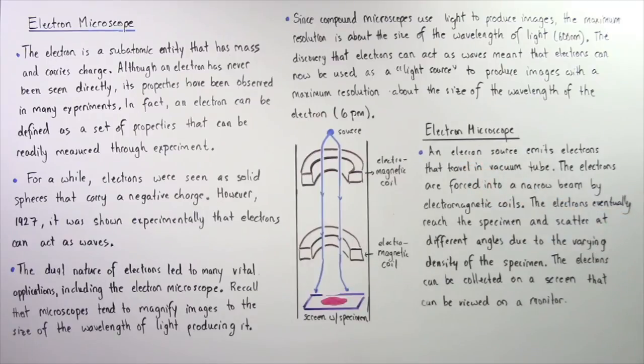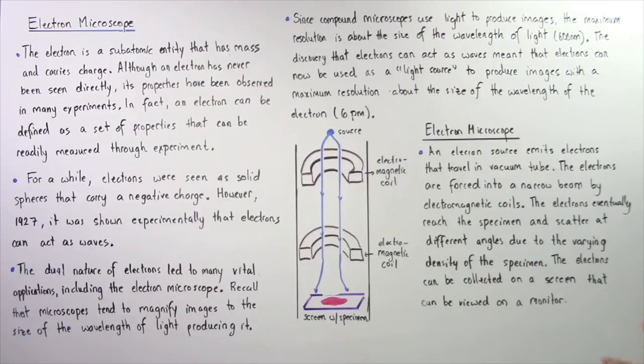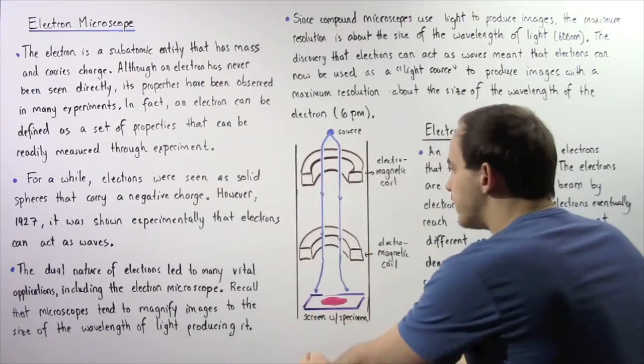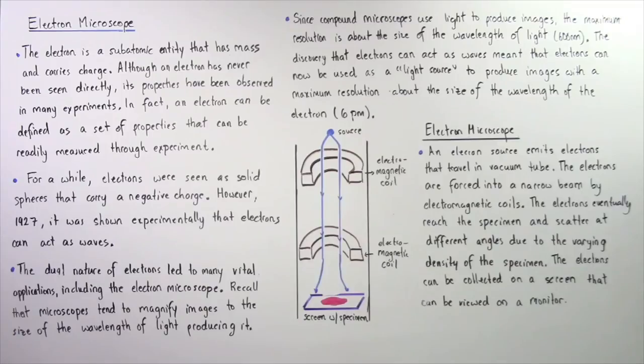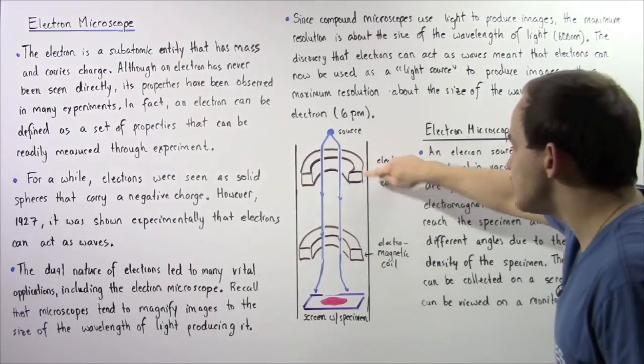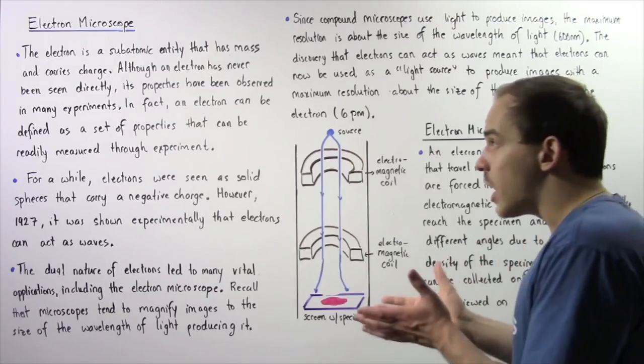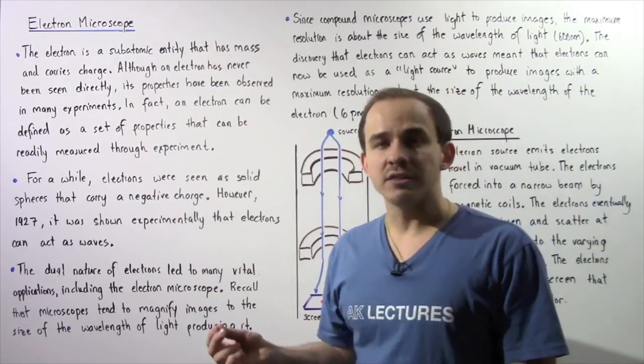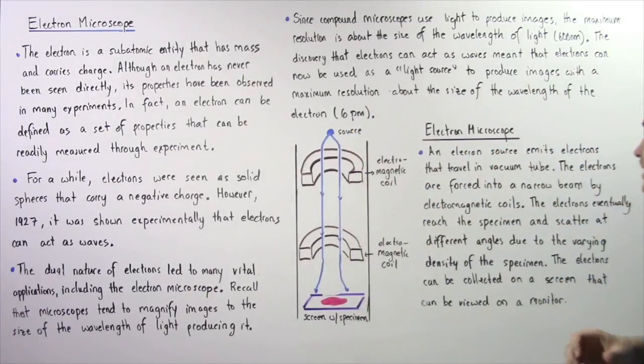So an electron source as shown in the following diagram basically emits and accelerates electrons, and those electrons travel through the vacuum that is found within the tube of our electron microscope. Now the electrons are forced into narrow beams by electromagnetic coils as shown by the following two coils, and that's because we know electrons have a negative quantity of charge, so they will be affected by these electromagnetic coils.